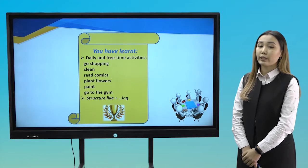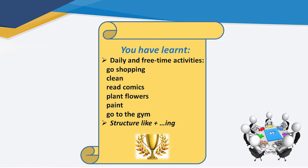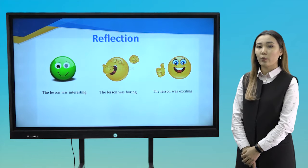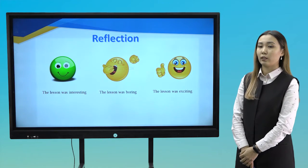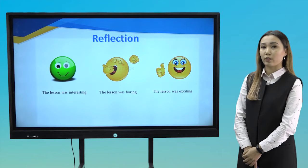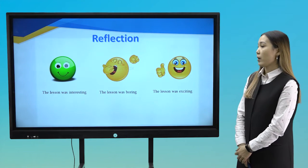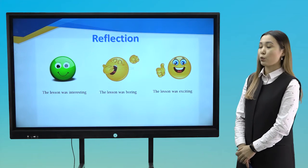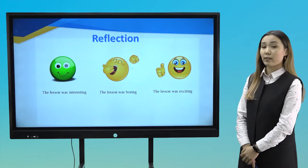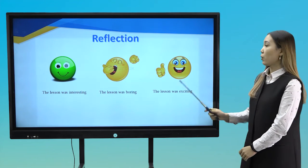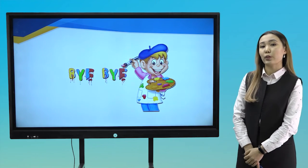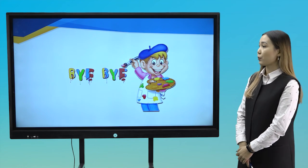Today at the lesson you have learnt daily and free-time activities and the structure 'like' and verb with -ing. Now express your reflection about the lesson using special emotional symbols. If the lesson was interesting, choose the green symbol. If the lesson was boring, choose this one. If the lesson was exciting, choose this one. Students, it's high time to finish our lesson. I hope that you have done your best. Thank you for the lesson. Goodbye.